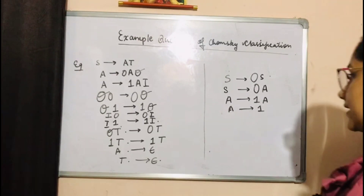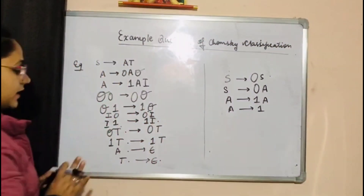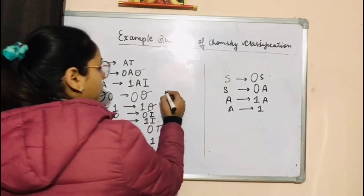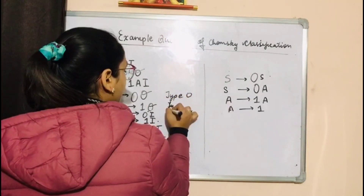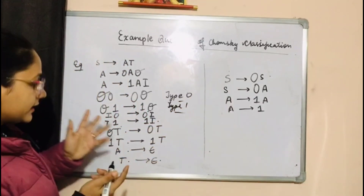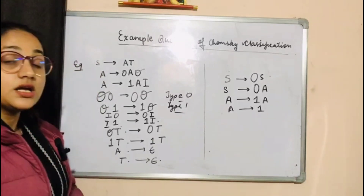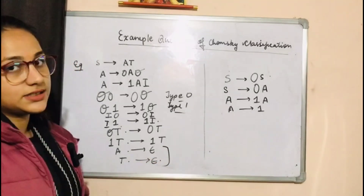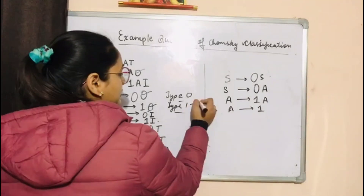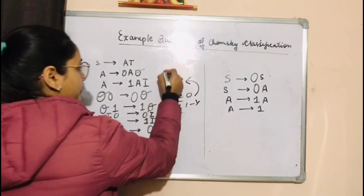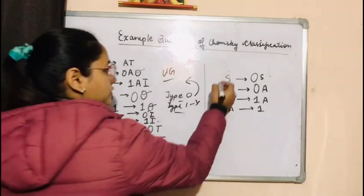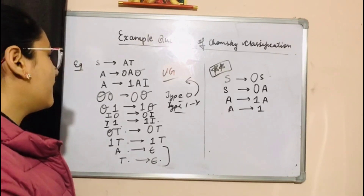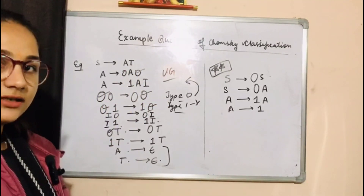Another example: S goes to some production. Here we can see there is context present, so we have two possible types: Type 0 or Type 1. We look at the right-hand side. Since the condition for Type 1 is not satisfied — for instance, epsilon is involved — we have no constant condition met. Therefore, this is a Type 0 production and an unrestricted grammar. You should practice this and find more questions online.